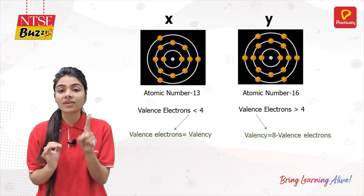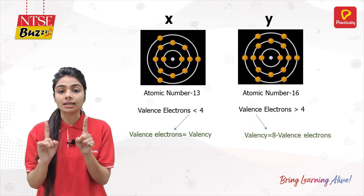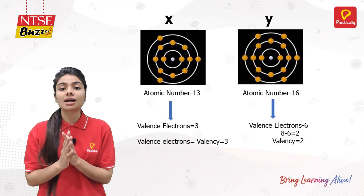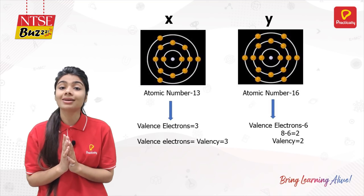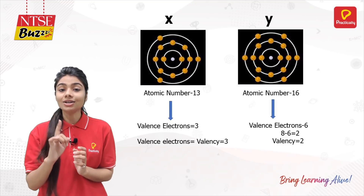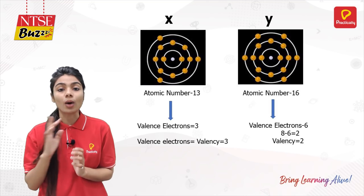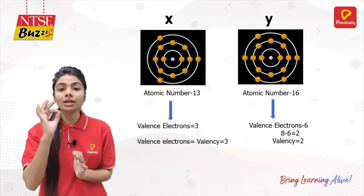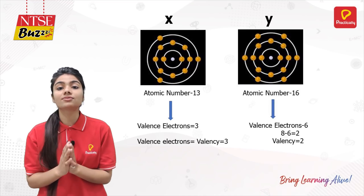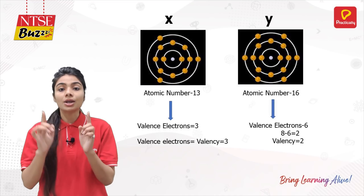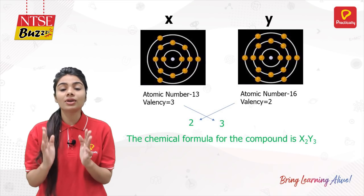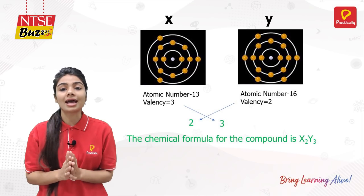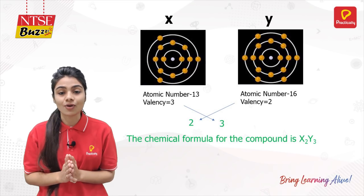The atomic number of X is 13, so there are 3 valence electrons — valence will be 3. For Y, the number of valence electrons are 6, so 8 minus 6 gives us 2. Now cross multiply: we get X₂Y₃ as our chemical formula.